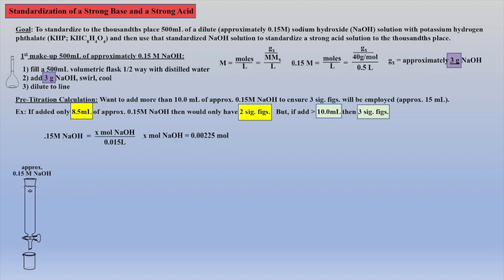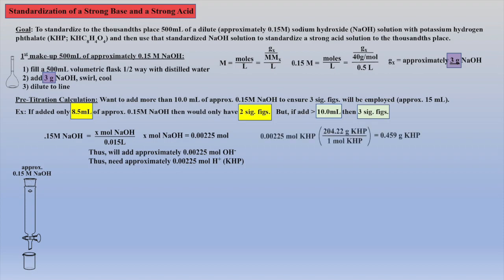This means we will deliver approximately 0.00225 moles of base, which means we need that many moles of KHP, the acid. Converting 0.00225 moles KHP to grams KHP indicates we need to weigh out approximately 0.459 grams of KHP.